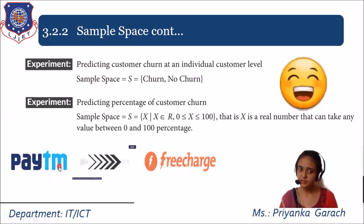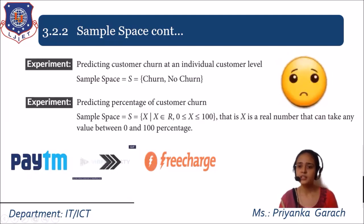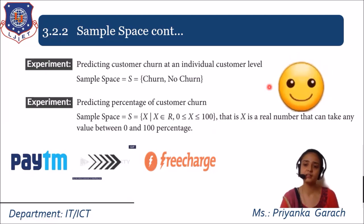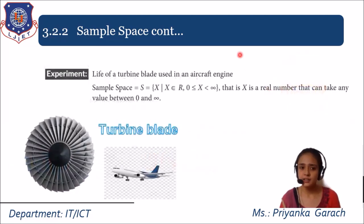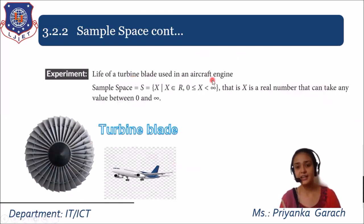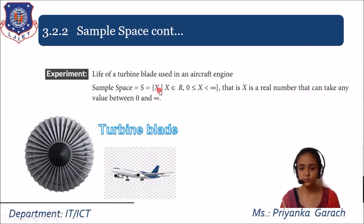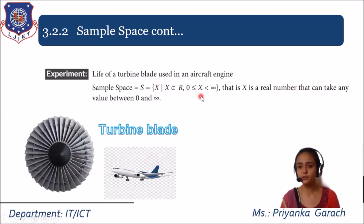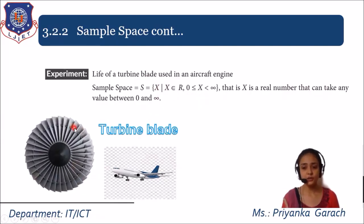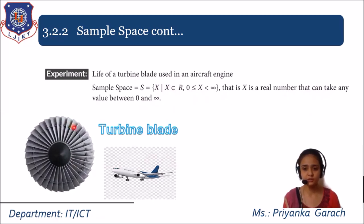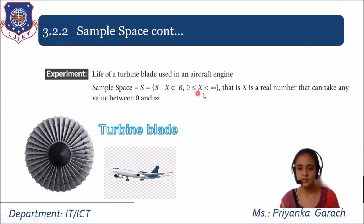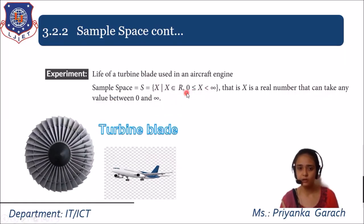Another example of sample space is the life of a turbine blade in an aircraft engine. Its sample space consists of variable X, where X is a real number whose values range from 0 to infinity. The turbine blade works for the lifetime of the aircraft or may need to be replaced due to technical issues. This complete set represents all possible outcomes — that is, the lifetime of the turbine blade.